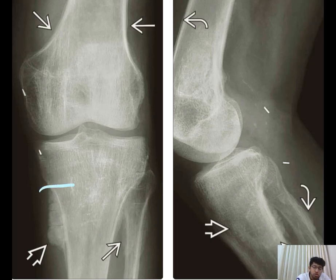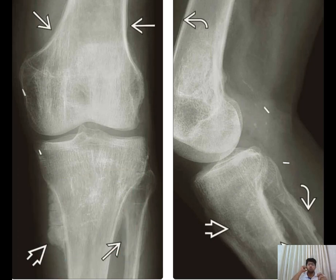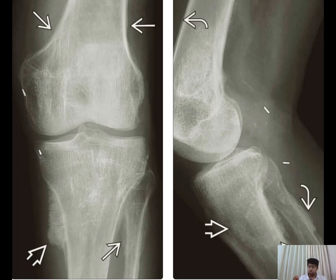Hypertrophic osteoarthropathy involves the metaphysis and the diaphysis. The most common bones involved are the fibula, tibia, and ulna. Involvement of the phalanges can also be seen, but they are less likely to be involved.